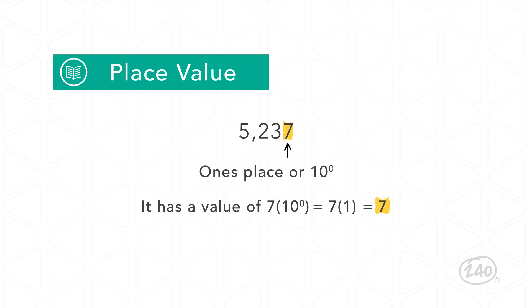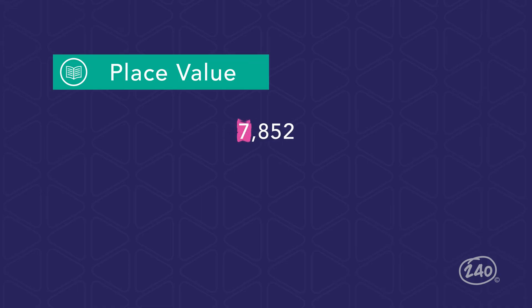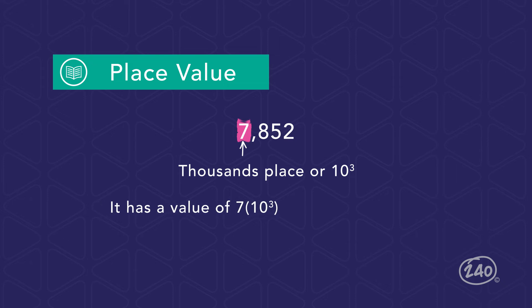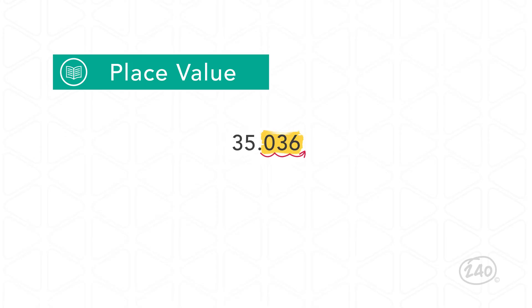However, the 7 in the number 7,852 is in the thousands place, which is also known as the 10 to the third place. It has a value of 7 × 10 to the third power, which is equal to 7 × 1,000, which becomes 7,000. Place values to the right of the decimal point have a negative exponent for their power of 10.